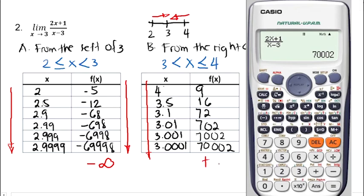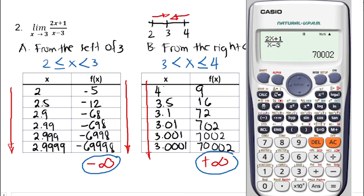Now we compare the results from the first and second table. We do not have the same answer from the left and from the right of 3. From the left, we have negative infinity, and from the right we have positive infinity. If we don't have the same answers on these two tables, then our limit does not exist, or we write it as DNE. Meaning, the limit of 2x plus 1 over x minus 3 as x approaches 3 does not exist.